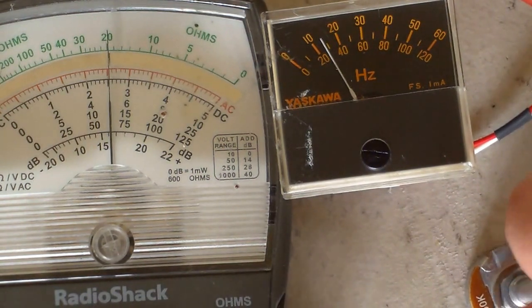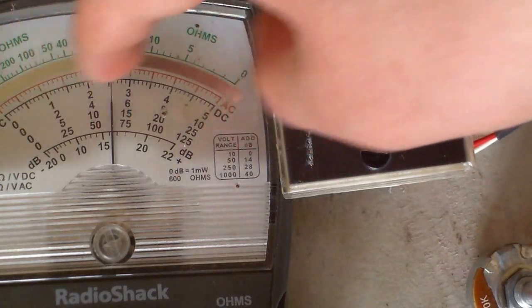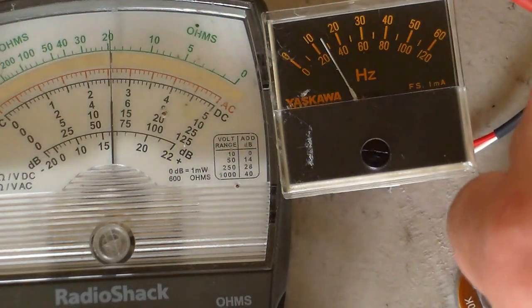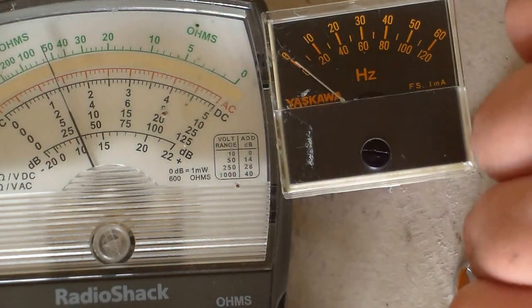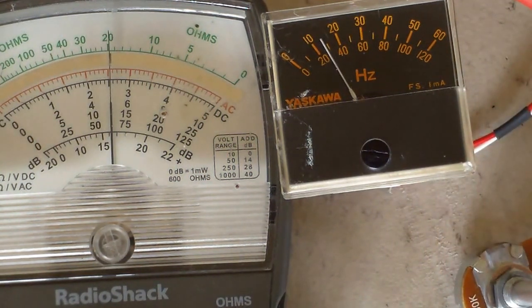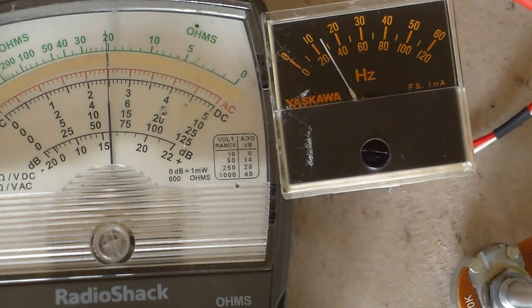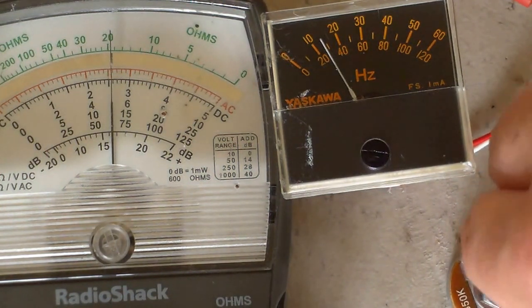That's 175 volts swing on the vacuum tube by just changing the voltage on the grid by 2 volts. And I'd say that's pretty impressive that this thing is able to do that.